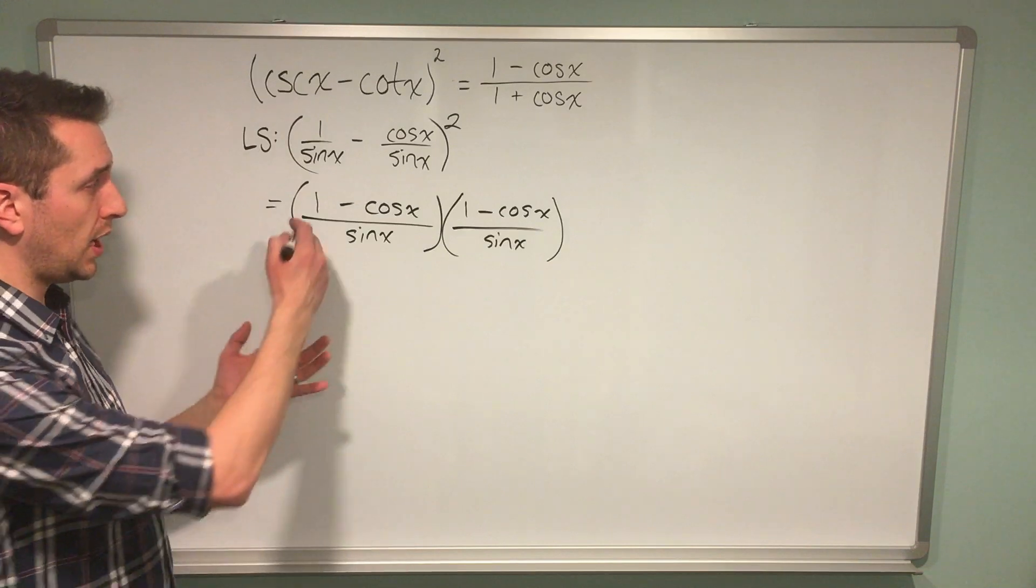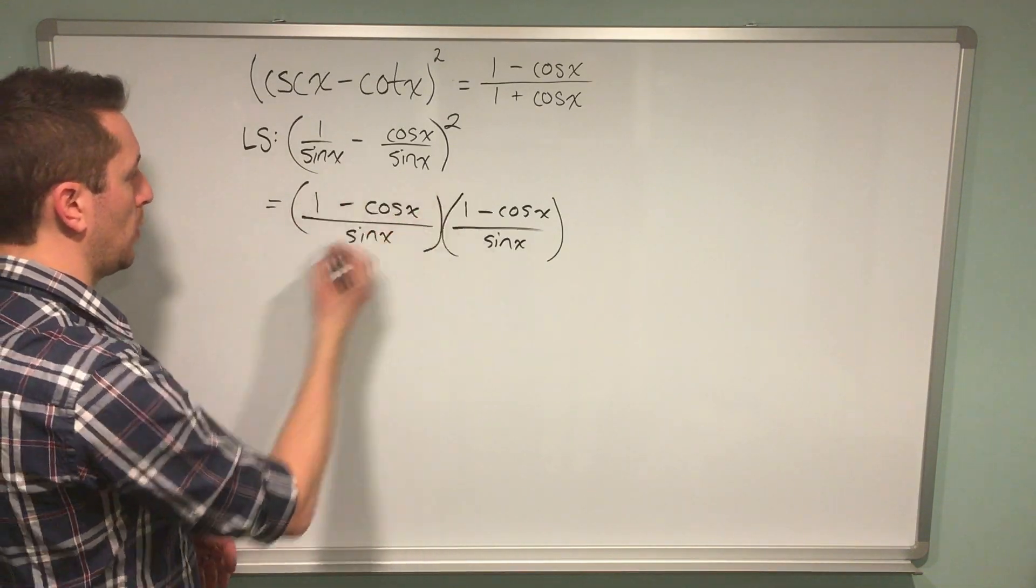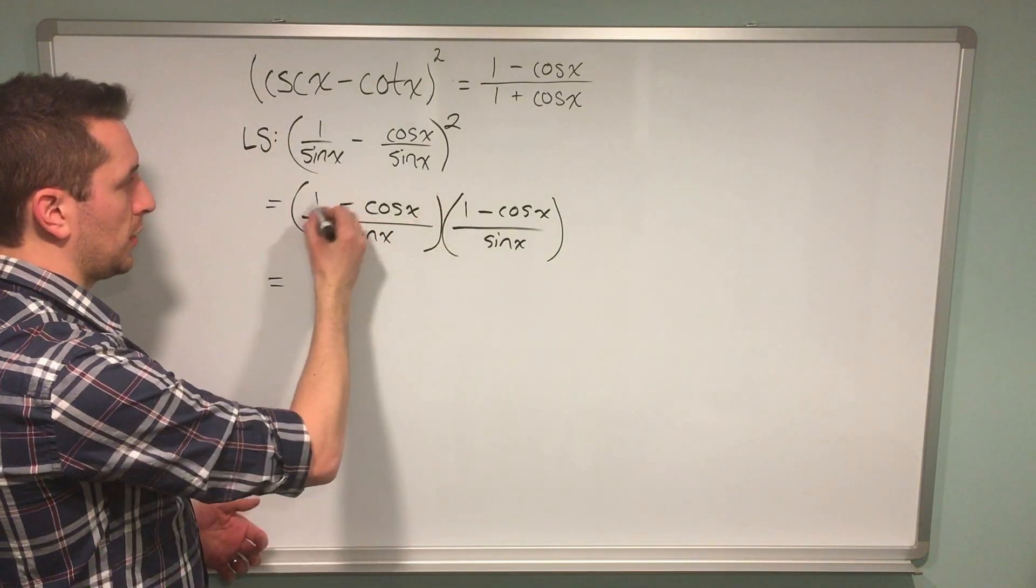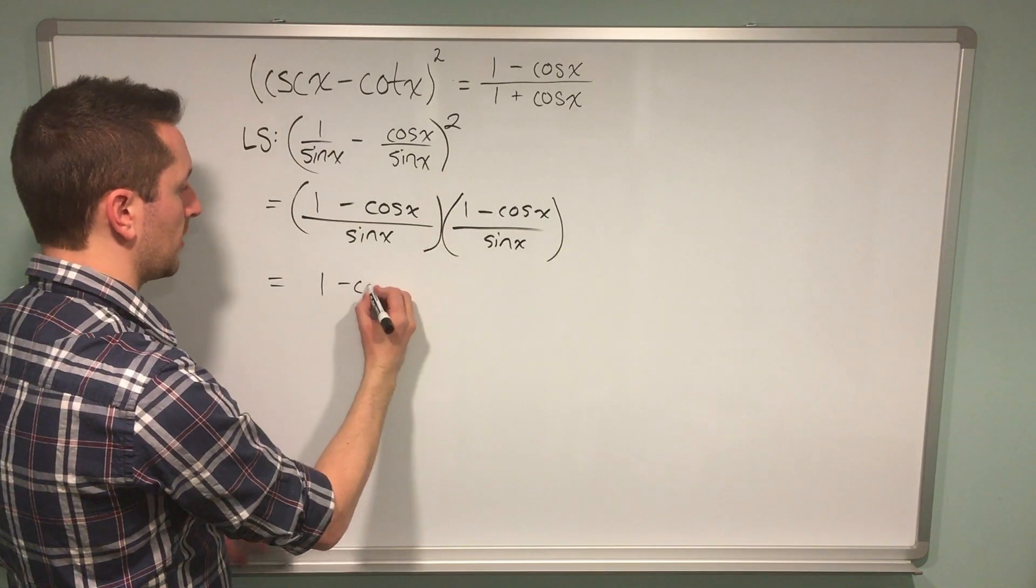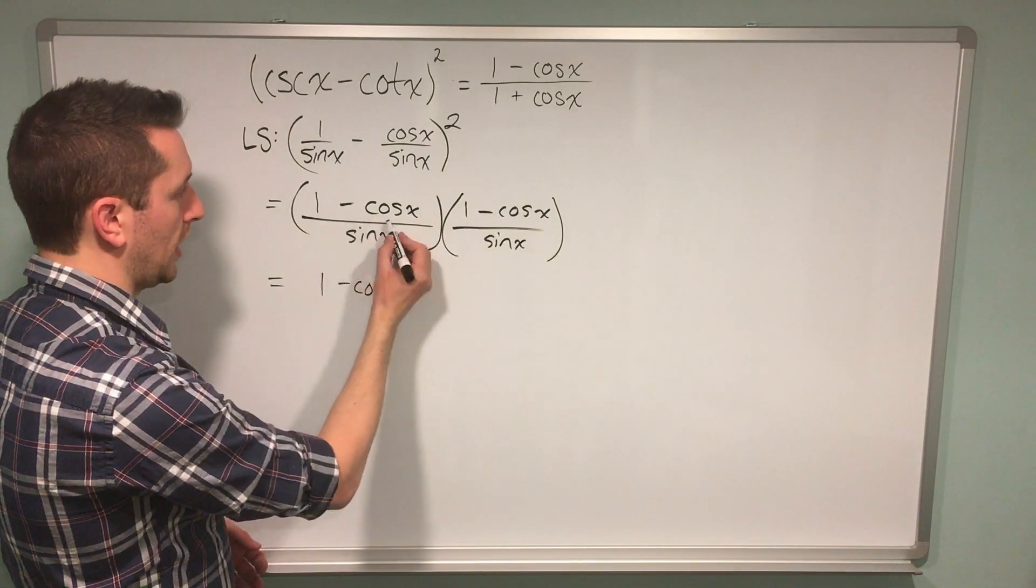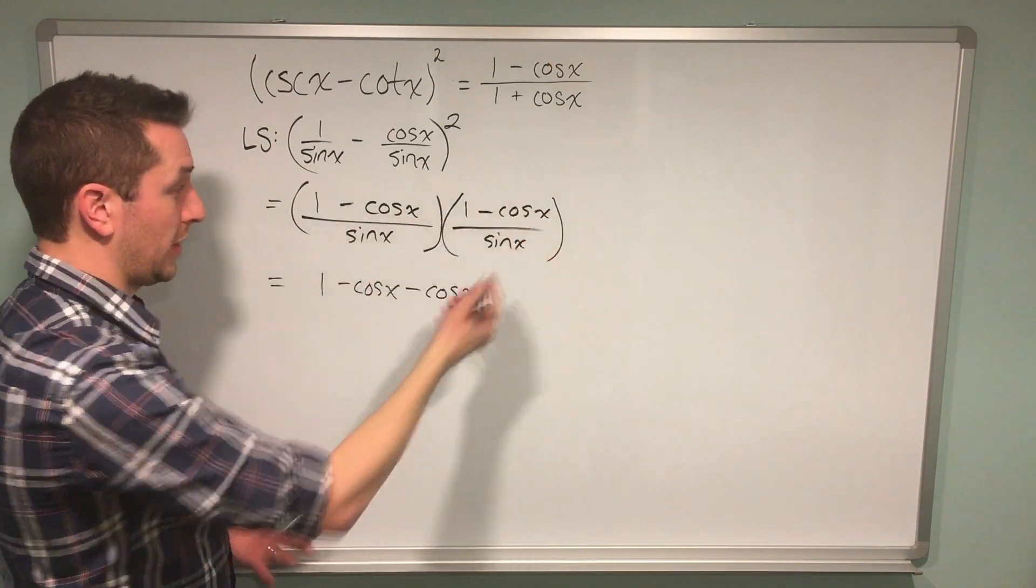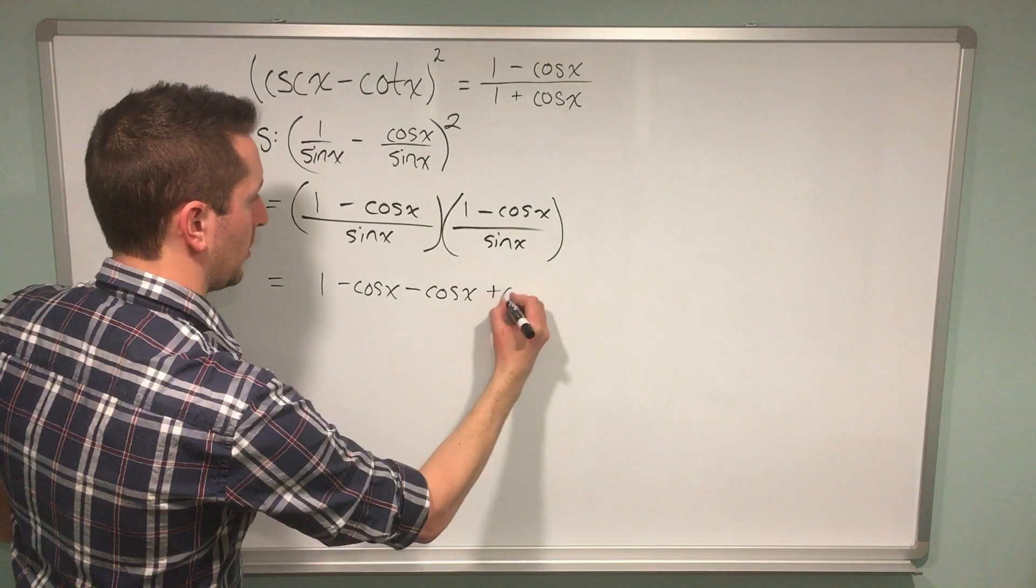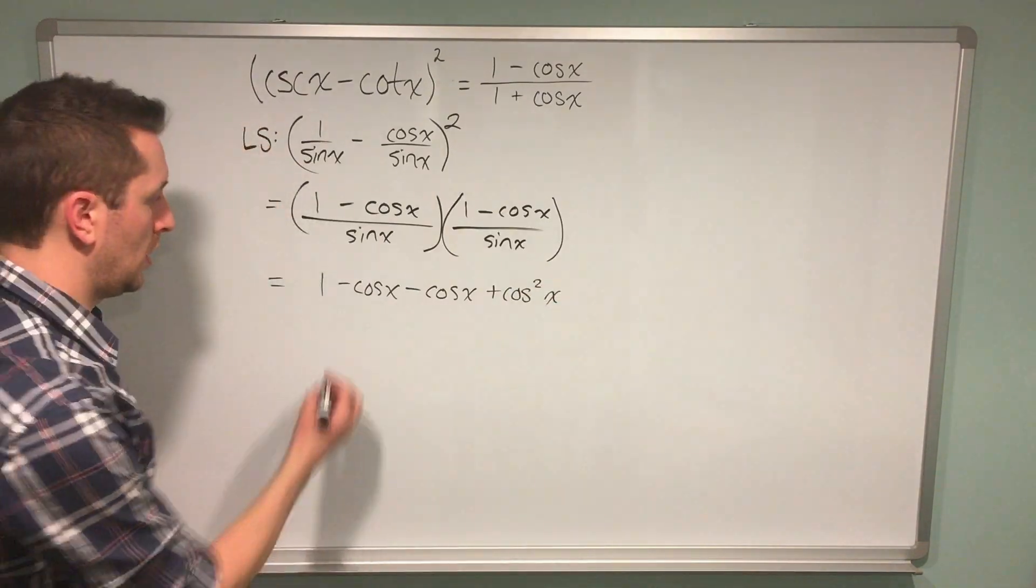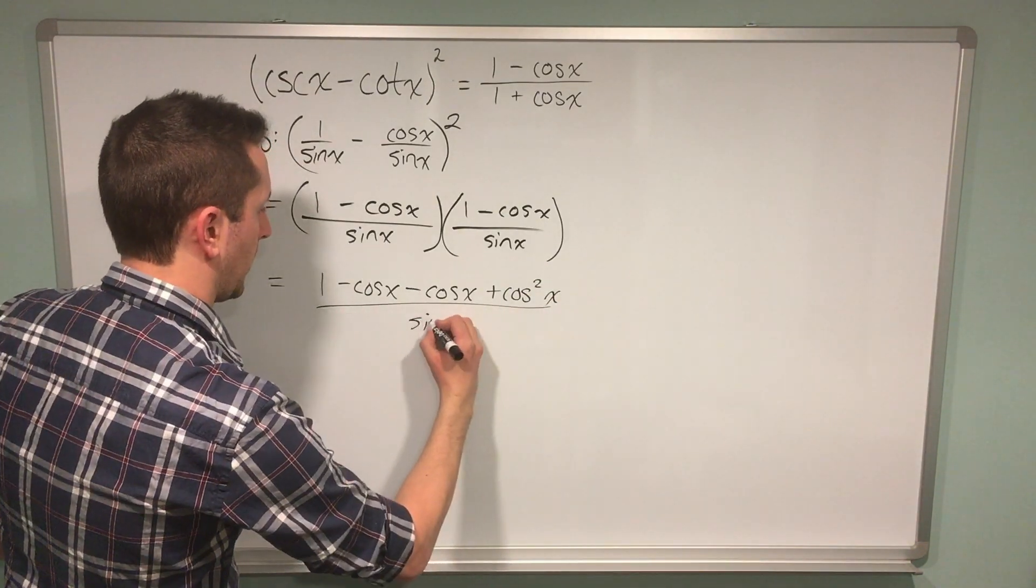At this point, I apply the FOIL process to multiply 1 by 1 and get 1. I multiply 1 by negative cos x to get negative cos x. I multiply negative cos x times 1, and negative cos x times negative cos x to get positive cos squared x. And of course, I still have my denominator of sine x.